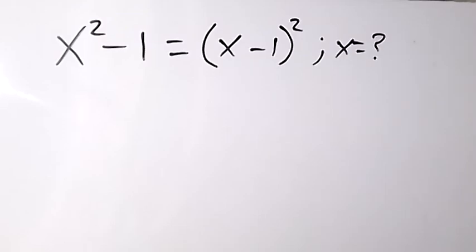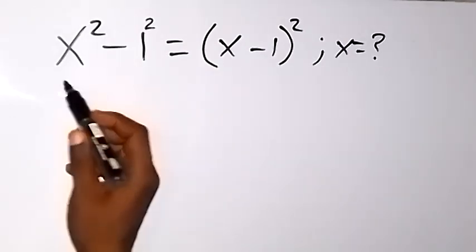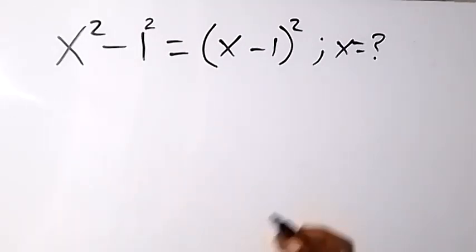Welcome to this class and thank you for joining us. Here we want to solve this equation and find the value of x. From the left-hand side, we can write this as 1² as well, because 1² is still 1. And this will give us an identity or difference of two squares.